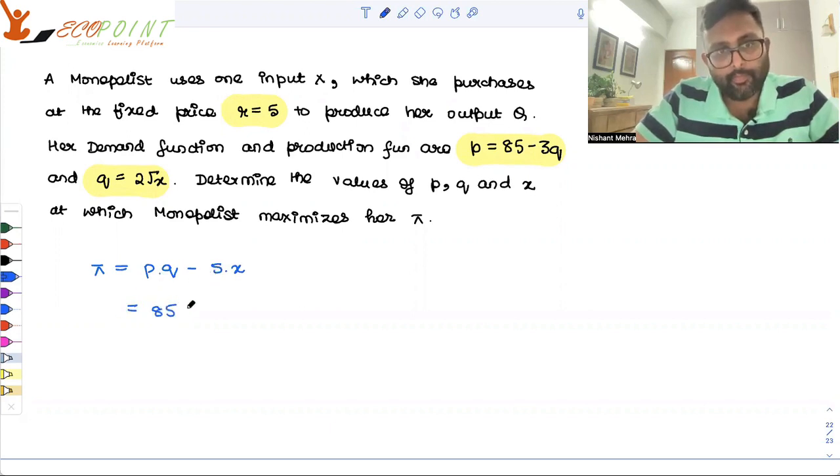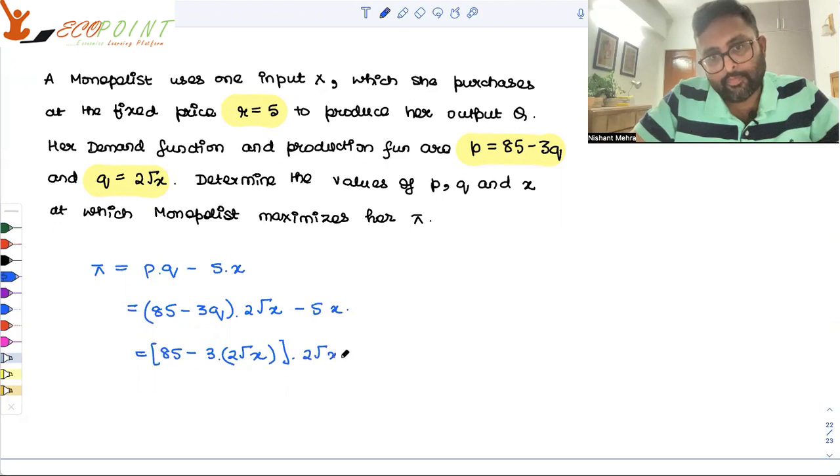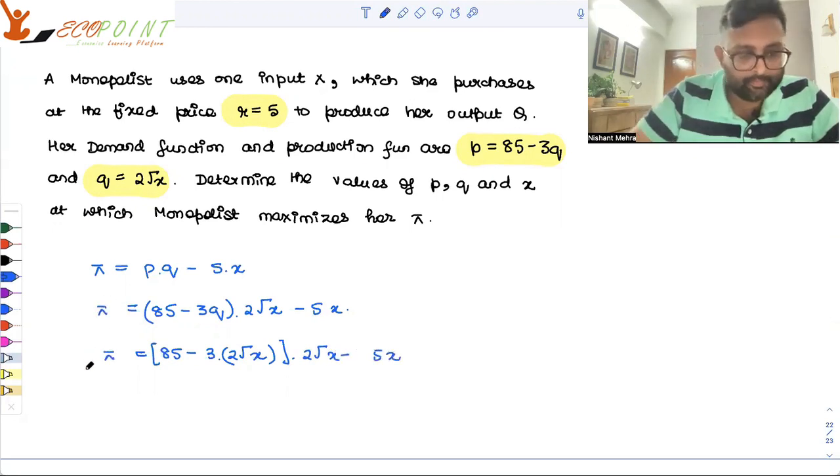What is p? 85 minus 3q. What is q? 2 root x minus 5x. In place of q, you guys can write again 2 root x, changing everything in terms of x. This is 170 root x minus 17x.